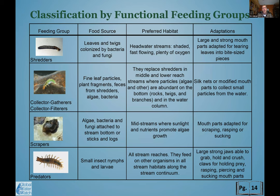Macroinvertebrates can also be classified by feeding group. We don't necessarily have to categorize them into functional feeding groups, but it gives a sense of where you'll tend to find certain creatures — for instance, in a headwater stream versus near the mouth. They primarily feed on leaf and twig plant debris, and some predators feed on one another.